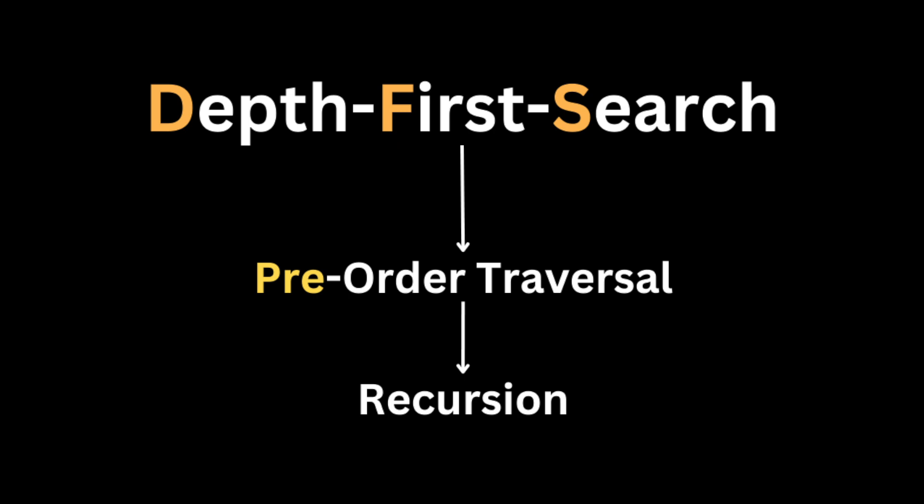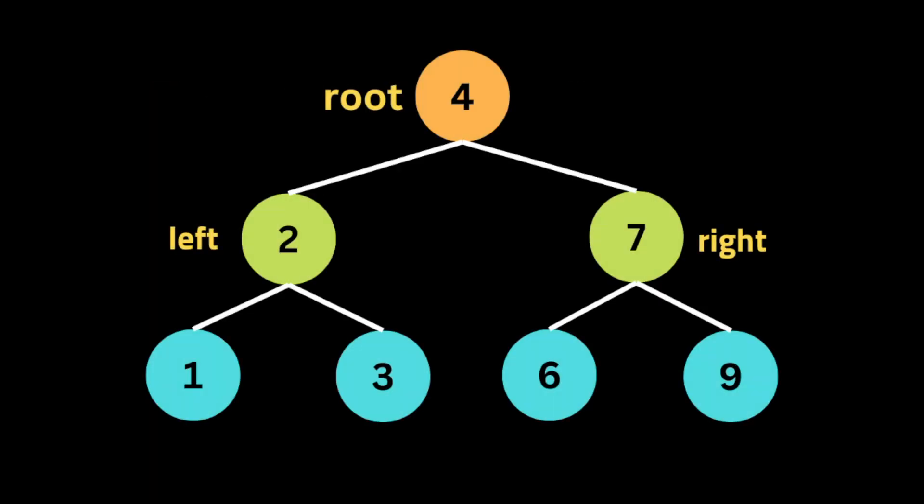To solve this problem we're going to use the depth-first search algorithm, or recursive pre-order traversal. That means we're going to visit the current node, then recursively call itself on the left child, and finally recursively call itself on the right child, and swap them.